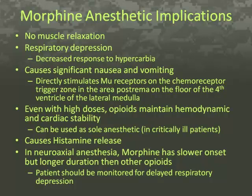Although morphine is an effective analgesic, it provides no muscle relaxation. The use of this medication also causes respiratory depression and depressed response to hypercarbia. A significant side effect of morphine is nausea and vomiting by its direct stimulation of mu receptors on the chemoreceptor trigger zone in the area postrema, located along the floor of the fourth ventricle of the lateral medulla. Even with high doses, opioids maintain hemodynamic and cardiac stability. Morphine has been shown to cause histamine release. In neuraxial anesthesia, morphine has a slower onset but longer duration than other opioids, and the patient should be monitored for delayed respiratory depression.